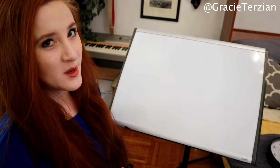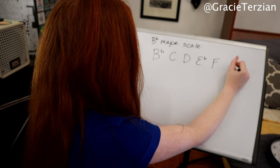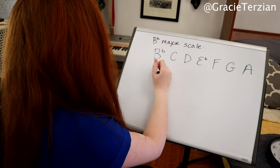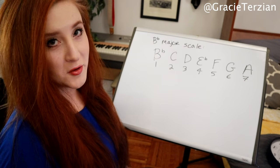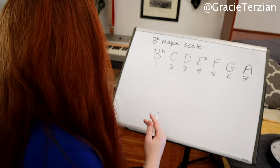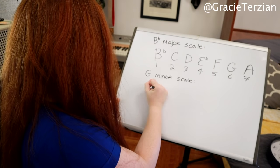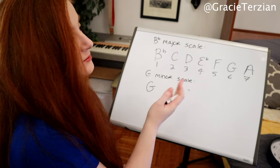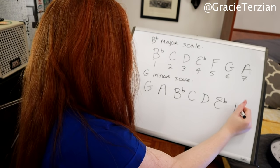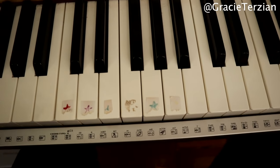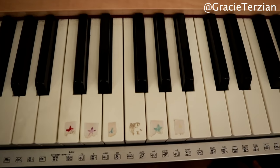What is the relative minor of B flat major? Let's write out our B flat major scale, then number it: one, two, three, four, five, six, seven. The sixth degree is G. So G minor is going to be our relative minor key. Let's write out our G minor scale, starting on G — same notes as B flat major: G, A, B flat, C, D, E flat, and F. Let's listen to a B flat major scale, then a G minor scale.